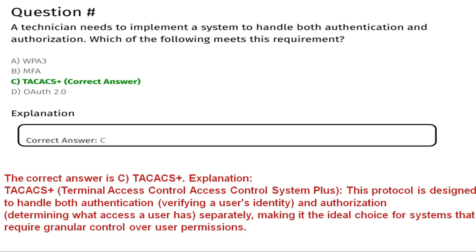Next question: A technician needs to implement a system to handle both authentication and authorization. Which of the following meets this requirement? Option A is WPA3, Option B is MFA, Option C is TACACS+, Option D is OAuth 2.0. The correct answer is C, TACACS+. TACACS+ (Terminal Access Control Access Control System Plus) is designed to handle both authentication — verifying a user's identity — and authorization — determining what access a user has — separately, making it ideal for granular user permission control.